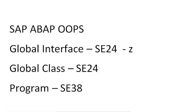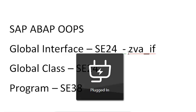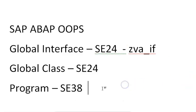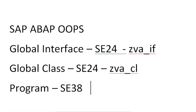The interface will be named ZEA_IF and the class will be named ZEA_CL. These are the three things we are going to create: the interface, the class, and the program. Let's do that now.